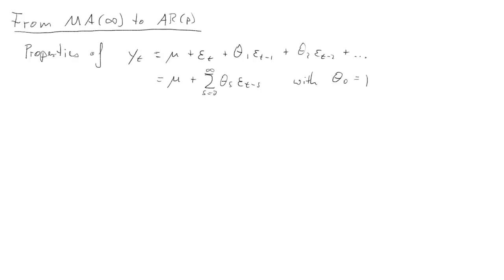Here we are going to see how MA infinity processes are related to finite AR processes. Let's start with the properties of this infinite MA process which you would have seen before. The expected value of Yt in this process was mu and here we have the variance and covariance.